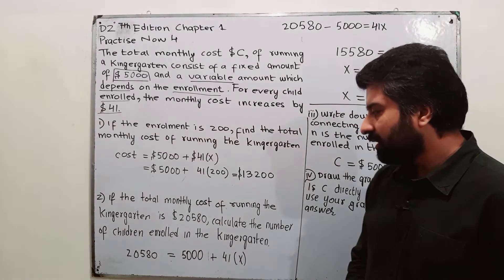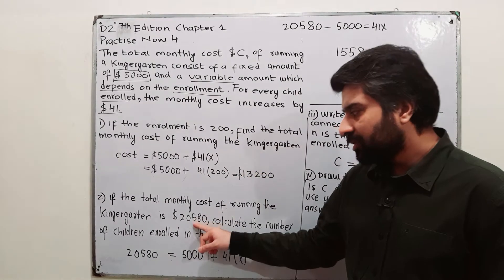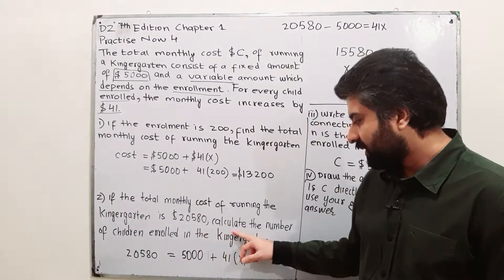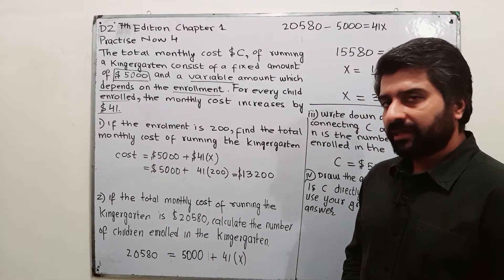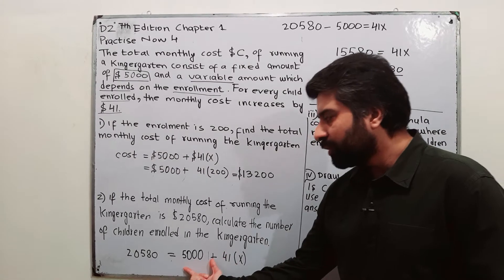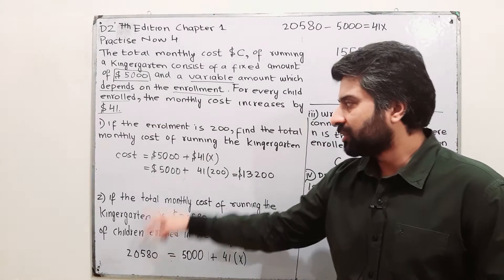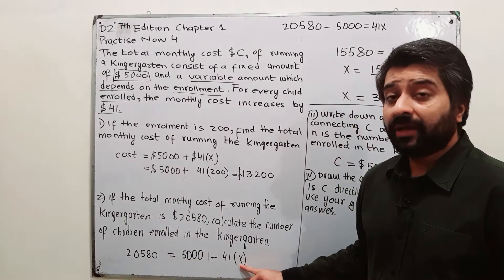Part 2 is if the total monthly cost of running the kindergarten, if the total monthly cost is $20,580, if the total cost is this one, calculate the number of children enrolled in the kindergarten. This is your equation. So, cost is now 20,580. This is total cost. That is equal to $5,000, the fixed cost plus 41 into x.